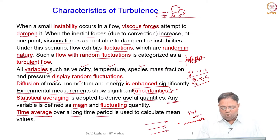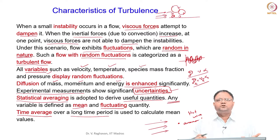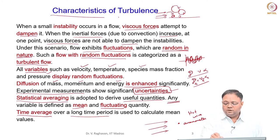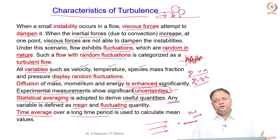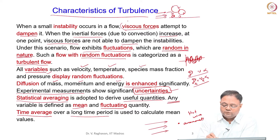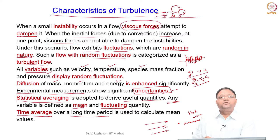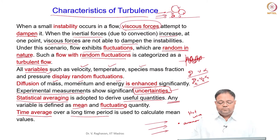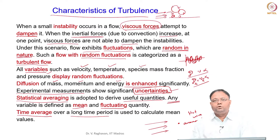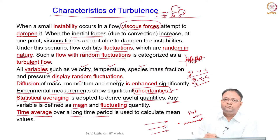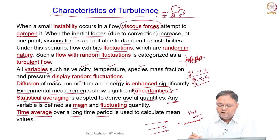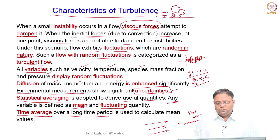The time average must be done for a long time period to give a mean value that is not a function of the time period. Turbulence is a very chaotic behavior of fluid flow in which the viscous forces are not able to dampen the fluctuations driven by instability, because the inertial convective strength is very high and the viscous forces cannot counter it. Once a small instability grows by taking energy from the high-inertia main flow, it grows as the turbulent flow proceeds.